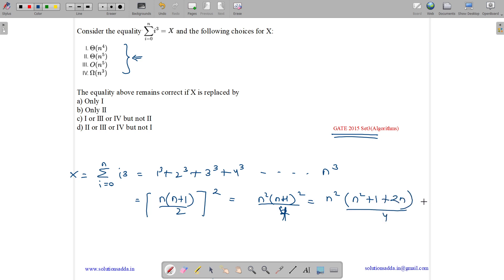This n square and n square will get multiplied. We will get n⁴ plus 2n³ plus n² by 4, which equals our x, which is equal to theta of n⁴. Theta of n⁴.